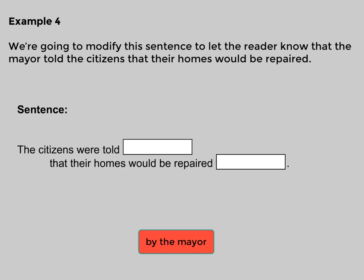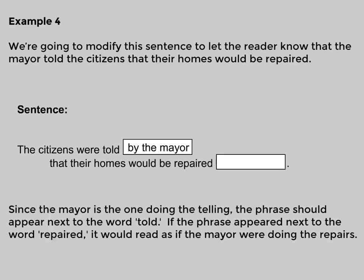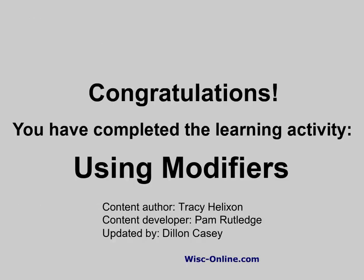Example four: let's modify this sentence to let the reader know that the mayor told the citizens that their homes would be repaired. Corrected: 'The citizens were told by the mayor that their homes would be repaired.' Since the mayor is the one doing the telling, the phrase should appear next to the word 'told.' If the phrase appeared next to the word 'repaired,' it would read as if the mayor were doing the repairs. Congratulations, you have completed the learning activity on using modifiers.